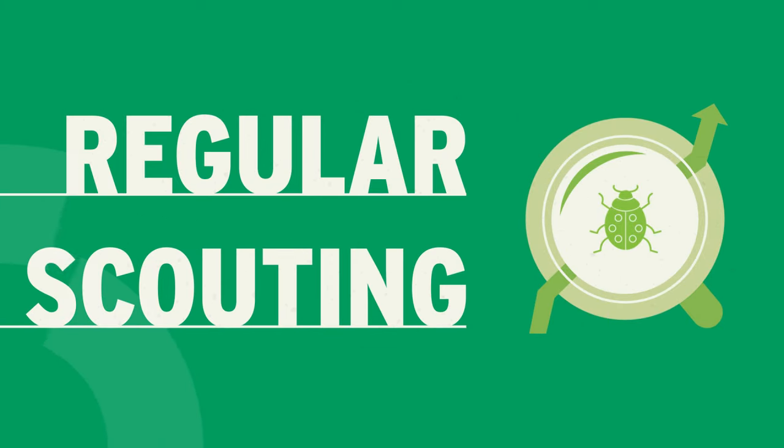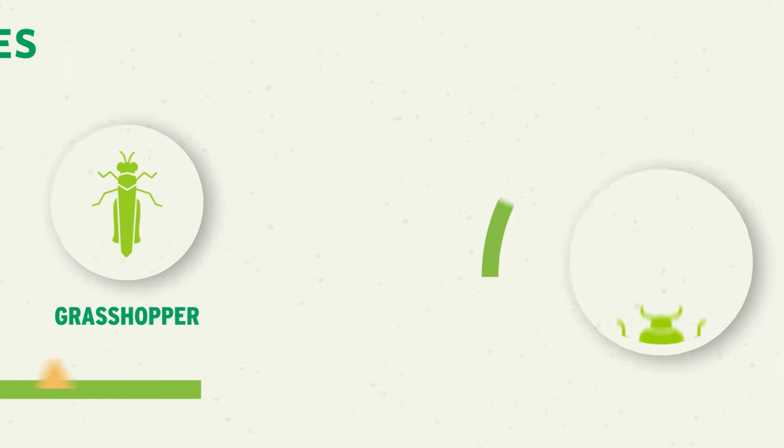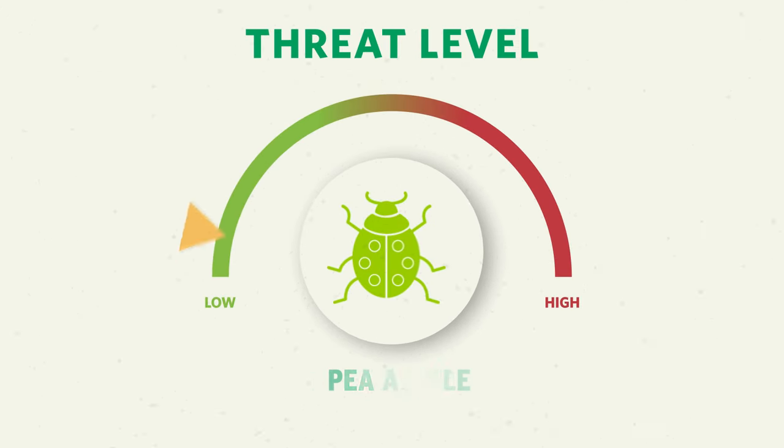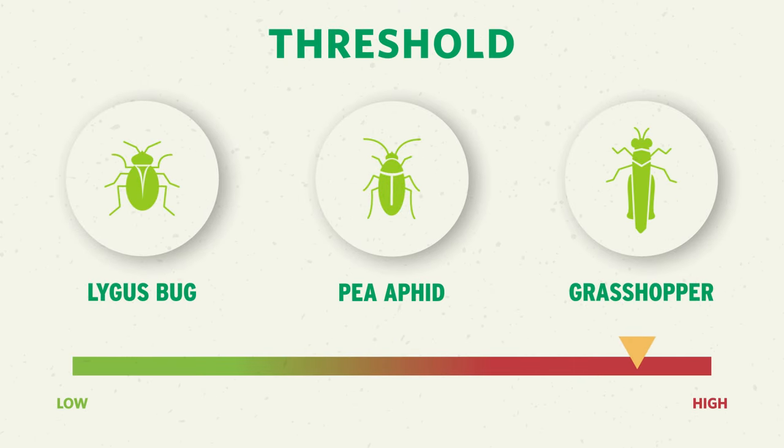Regular scouting is needed before spraying to identify the insect types, determine if they pose a threat, and evaluate if the number of pests exceed the threshold for intervention.